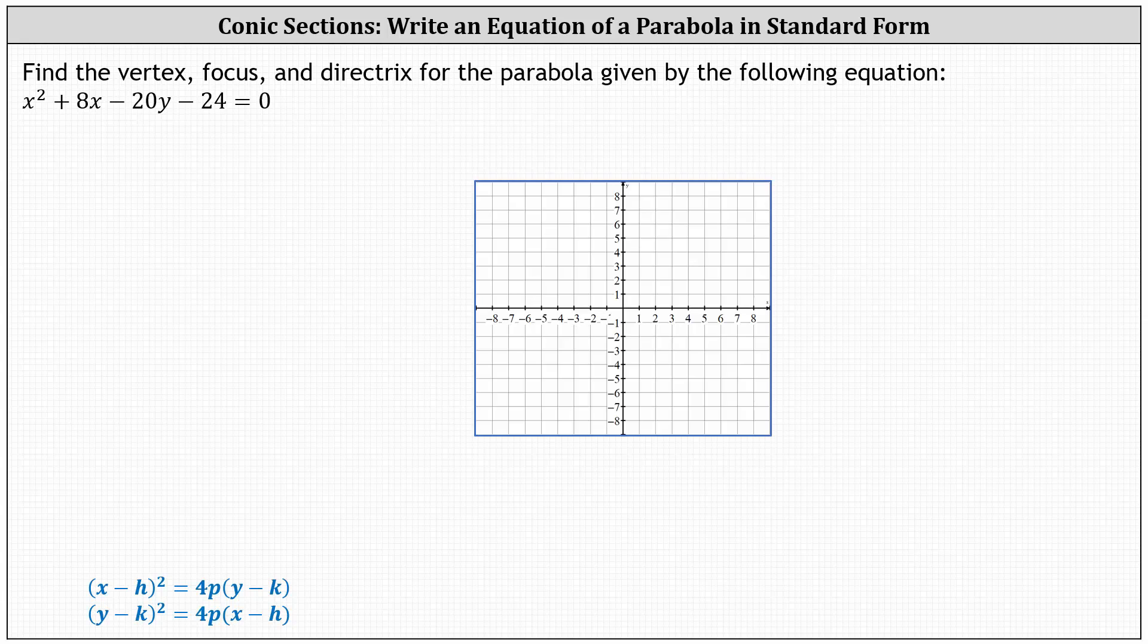Because our equation contains x squared and not y squared, we'll write the equation in the first form, or the square of x minus h equals 4p times the quantity y minus k. Because the x part is squared, the parabola will open up or down based upon the sign of p. If p is positive, it opens up. If p is negative, it opens down. And h comma k is the vertex.